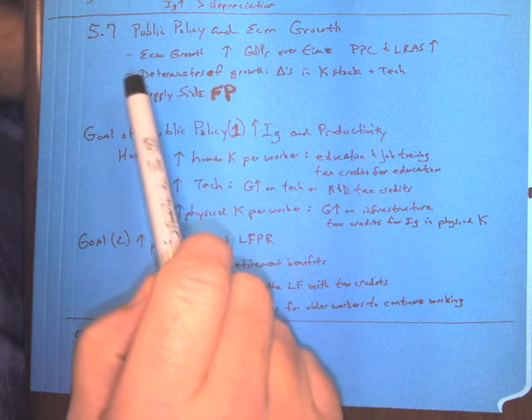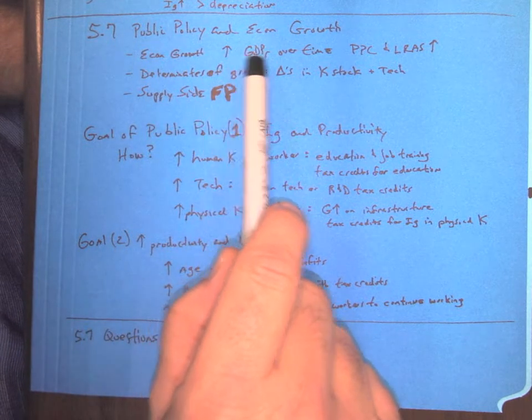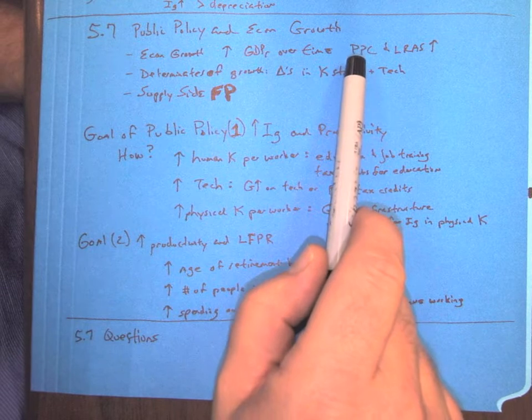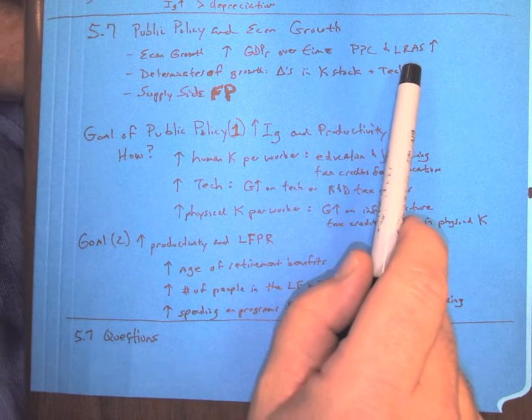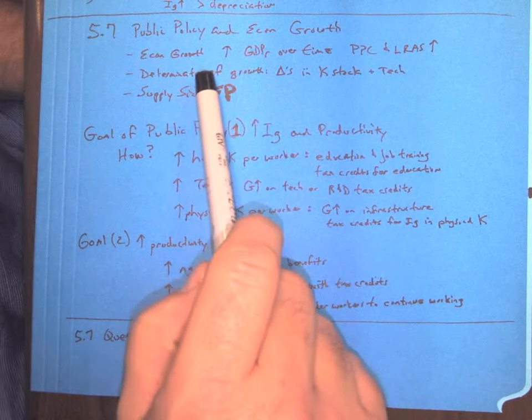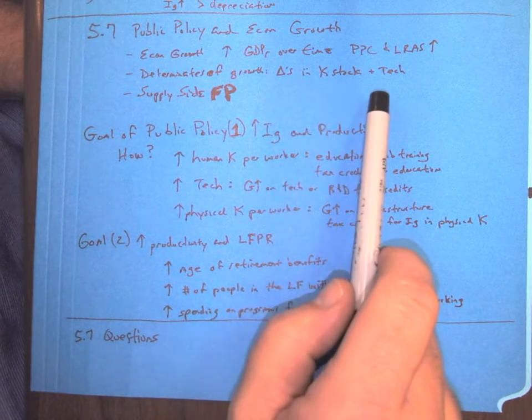Some things to keep in mind: economic growth is about GDP over time, and we can show that in the production possibility curve and long-run aggregate supply curve. Determinants of this growth are going to be changes to capital stock and technology.